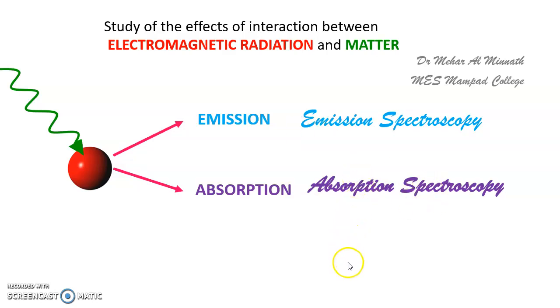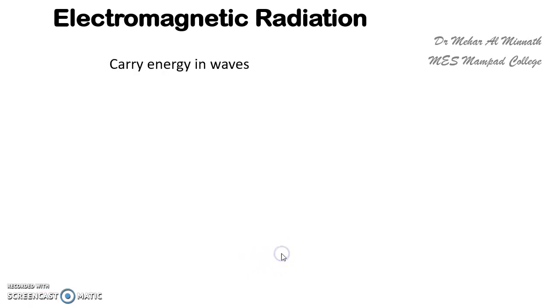Spectroscopy is the study of the interaction between electromagnetic radiation and matter. Now, electromagnetic radiation is nothing but waves which carry energy. These electromagnetic radiations are also said to have dual nature — that is, they exhibit both wave and particle reality. We will see that.